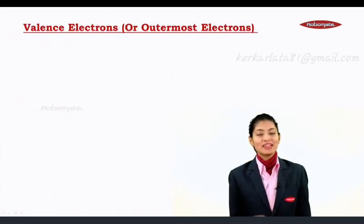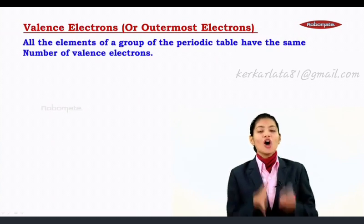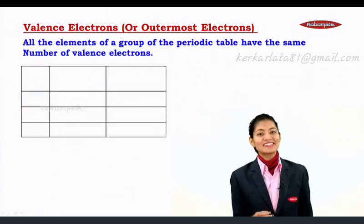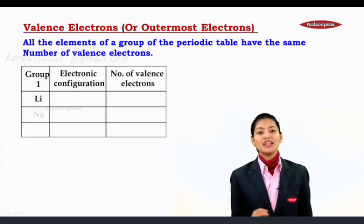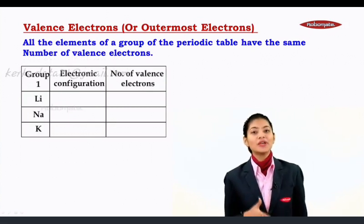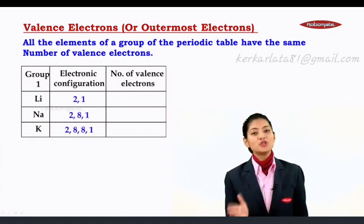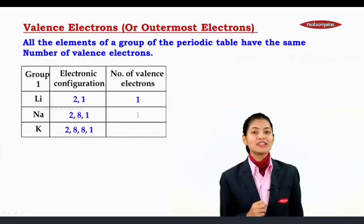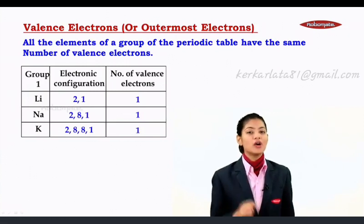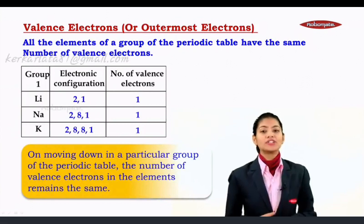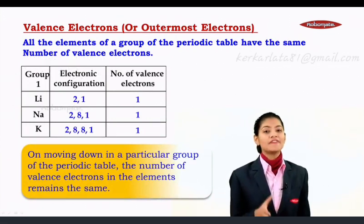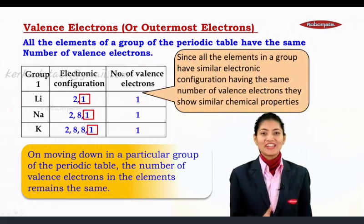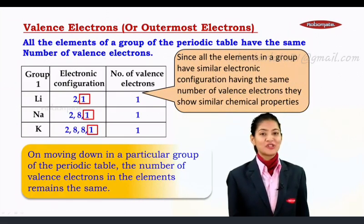Now let us move on to valence electrons in a group. All the elements of a group in the periodic table have the same number of valence electrons. For example, the elements of group 1 — lithium, sodium, and potassium — have configurations 2,1 and 2,8,1 and 2,8,8,1. These three elements each have one electron in the outermost shell, so all of them have one valence electron. Moving down a group, the number of valence electrons remains the same.